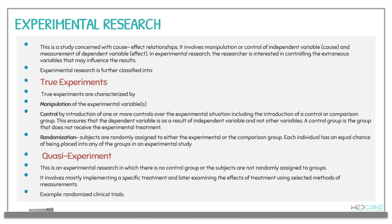Experimental research can be broken down into two types: the true experiment and the quasi-experiment. True experiments have three characteristics: manipulation, control, and randomization.